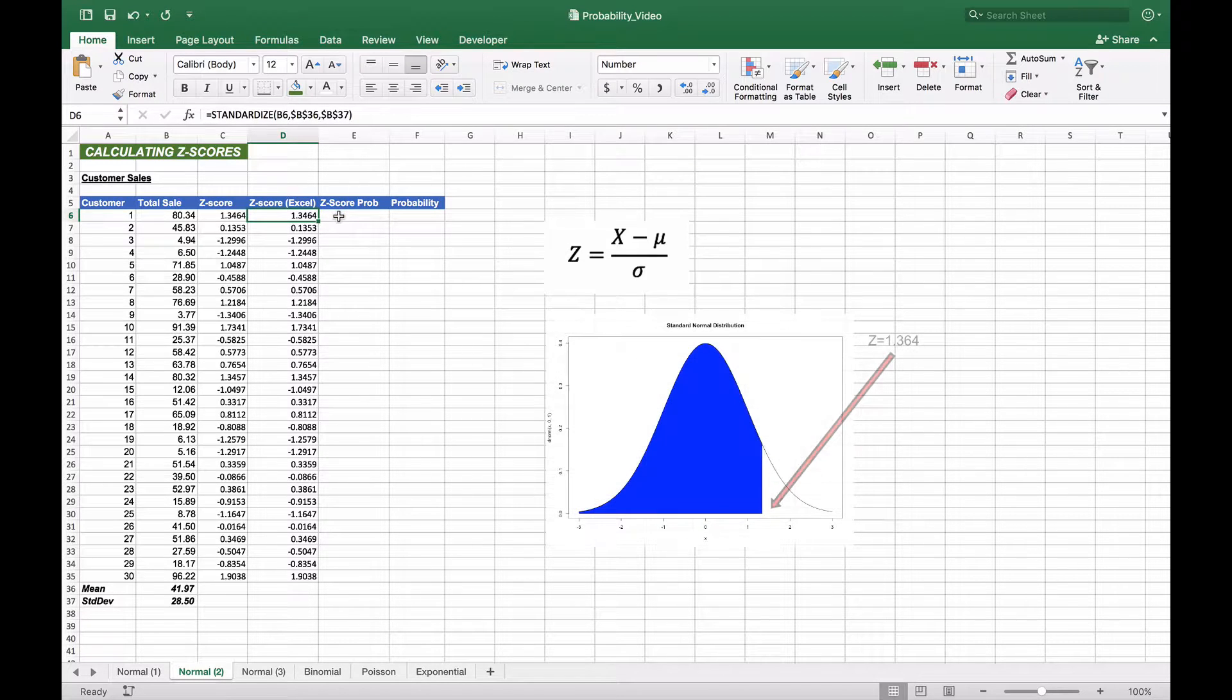So what we're going to do now is we're actually going to calculate what the probability is under the curve from that point to the left all the way to the end of the curve for a particular z-score.